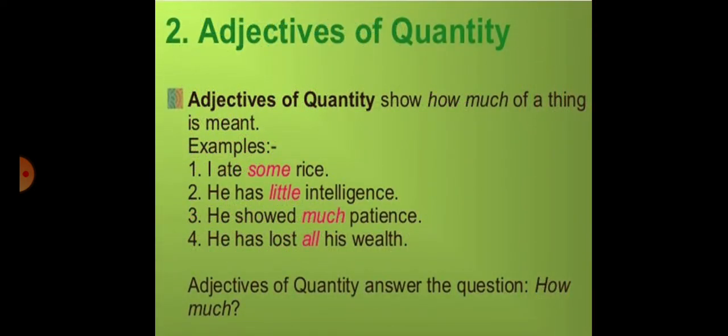Now let's move towards the other kind, that is adjectives of quantity. Definitely yeh aise words hongi, viewers, jo ke kisi na kisi miktar ko, quantity ko show karengi. See the example: I ate some rice. Rice is what? Our noun. Some, kuch - this is telling us the quantity. That's why it's adjective of quantity. So adjectives chahe quality ke hongi ya quantity ke, in one or the other way they will be describing more about nouns and pronouns. Yeh function aapne yaad rakhna hai - it describes nouns and pronouns in one or the other way.